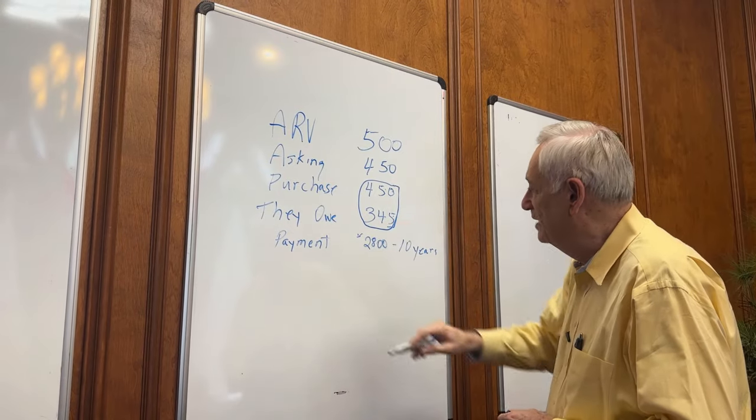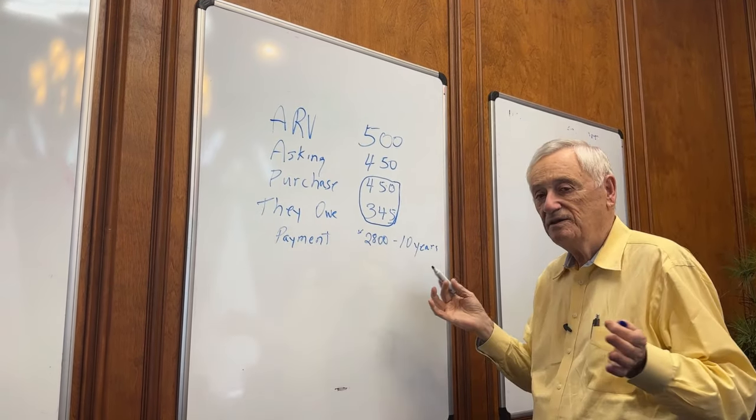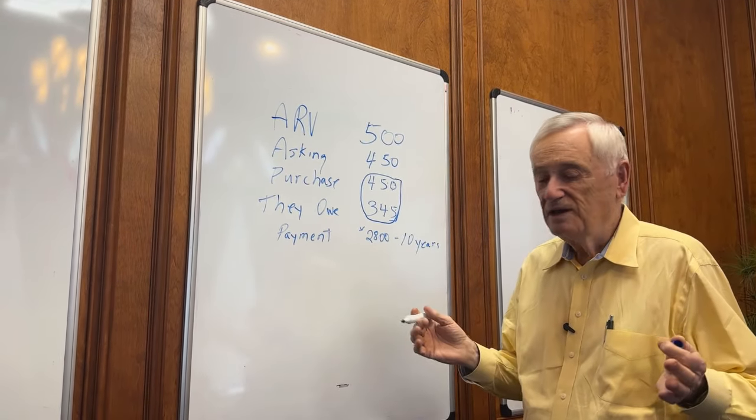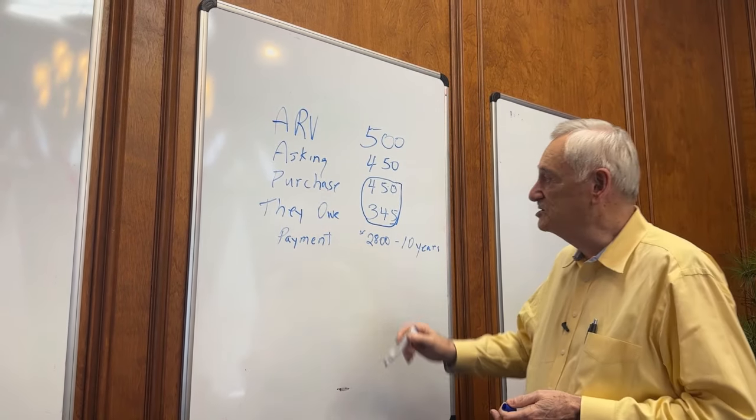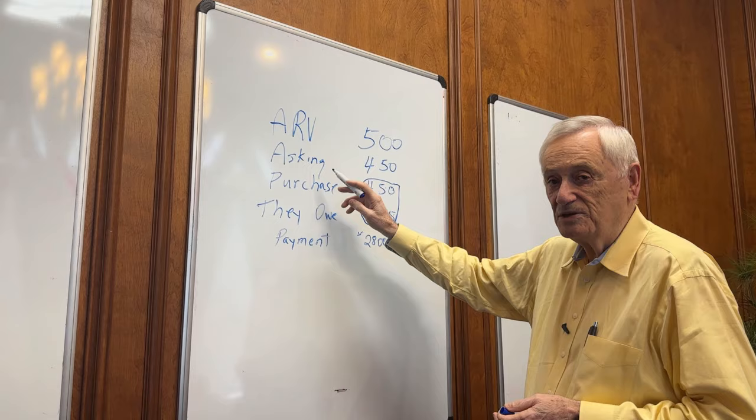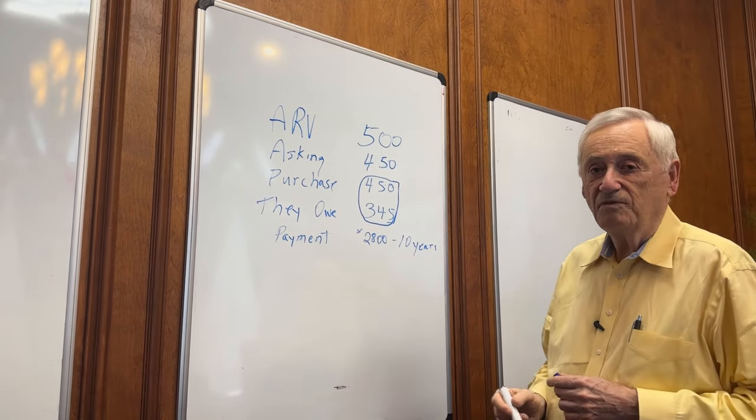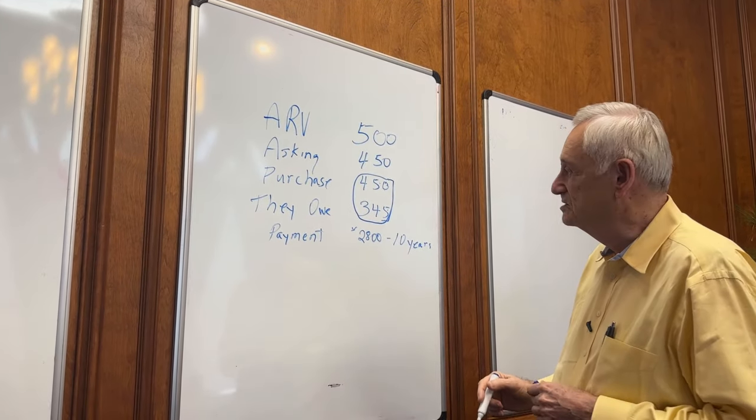So that's one way to buy a house. There's nobody qualifying, nobody filling out an application. Nobody going to a bank and asking permission. The only permission that I need is the seller's permission, and orally on the phone we've already agreed to that, and we'll have a contract on that tomorrow afternoon.